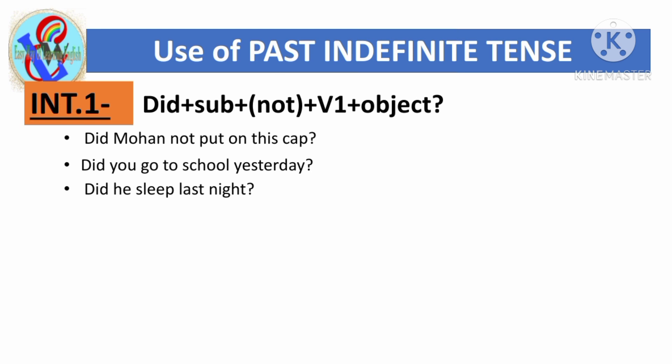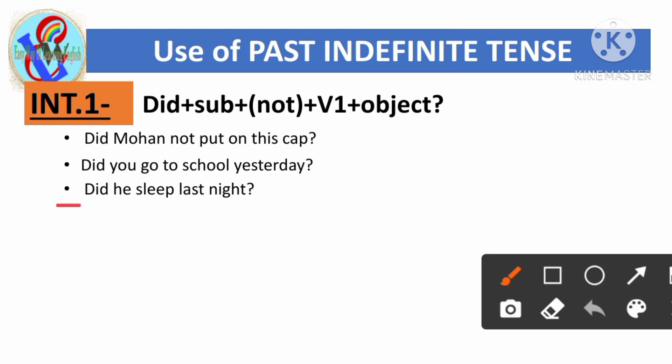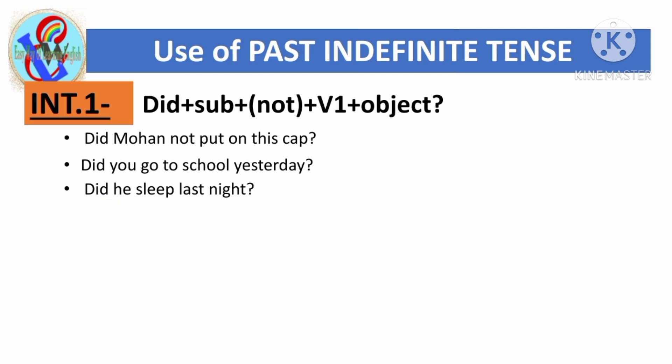'Did he sleep last night?' Here 'did' is used first, then the subject 'he', then the first form of the main verb 'sleep'. No question word appears in this sentence, but because it's interrogative, 'did' is used at the very beginning.